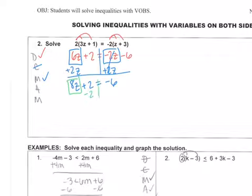Then I will move 2, so subtract 2 from both sides. 8z equals negative 8. And finish by dividing everything by 8. So z equals negative 1.